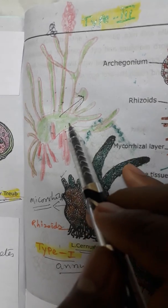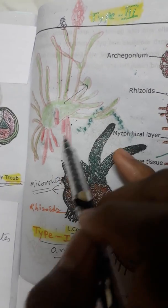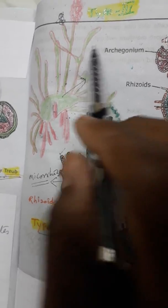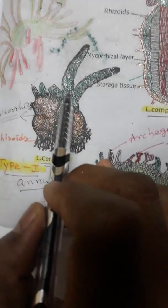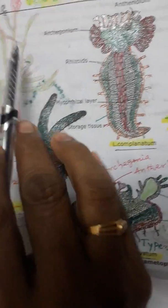Type 3. It is also perennial, colorless. So the first one is annual, second one is perennial, third one is perennial.